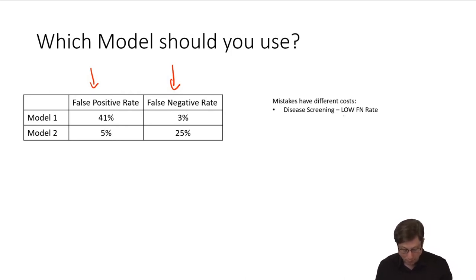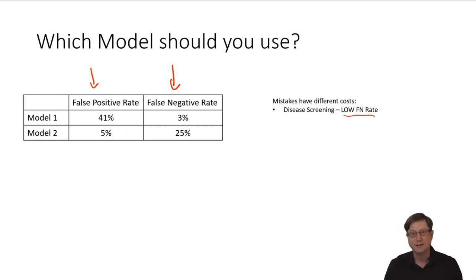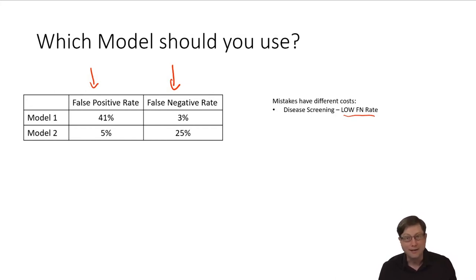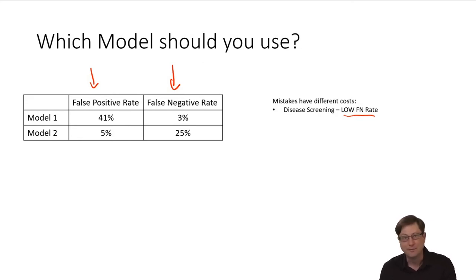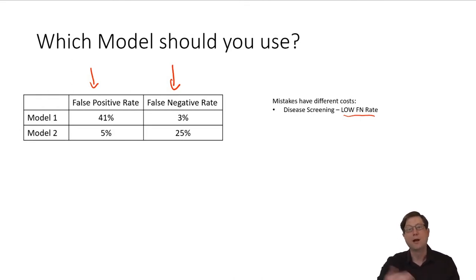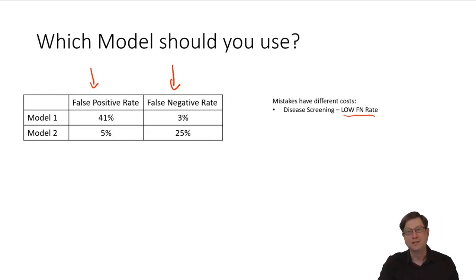In disease screening, you probably want a low false negative rate. The justification is that if somebody has a disease — if there's any chance they have a disease — you don't want to send them home and say they're fine. You want to get a false positive and get them to the next level of tests. Maybe you do something more expensive like a biopsy or imaging. But you don't want a false negative to rule them out before they have the opportunity for those tests. You'd rather have a few false positives go to those tests.